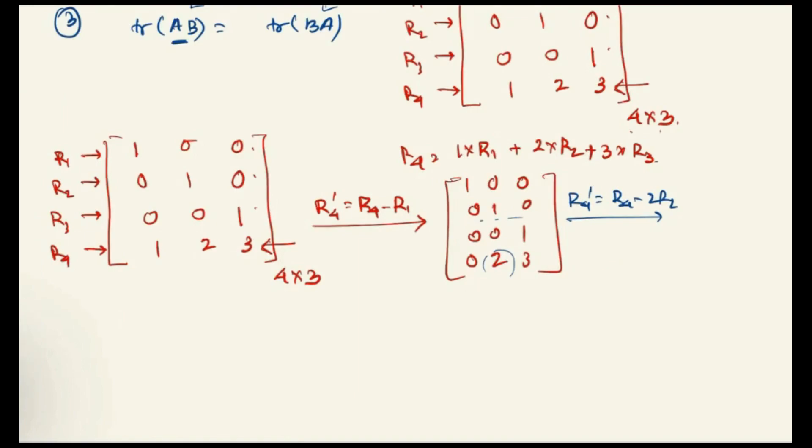And again, we can do something like R4 dashed equals to R4 minus 2R2. If we do that, then we can make this two zero because we are multiplying this with two and minusing it with the fourth row. So this will be again 1, 0, 0, 0, 1, 0, 0, 0, 1 and 0, 0, 3.